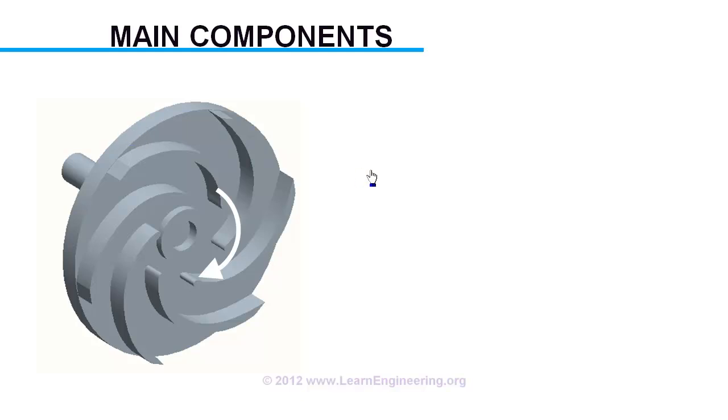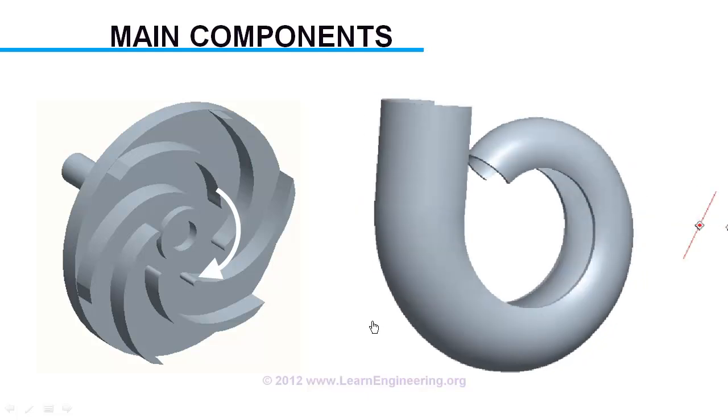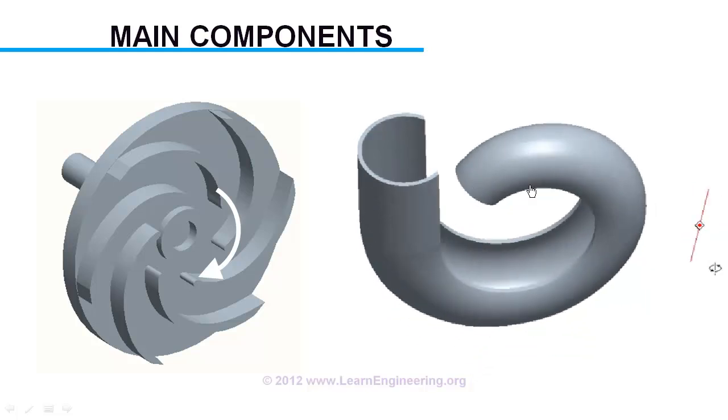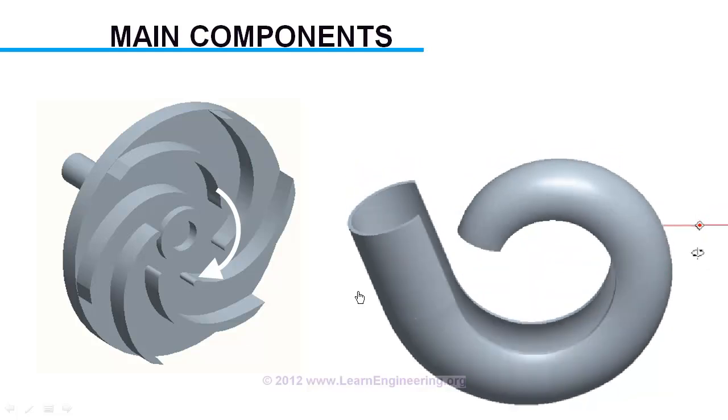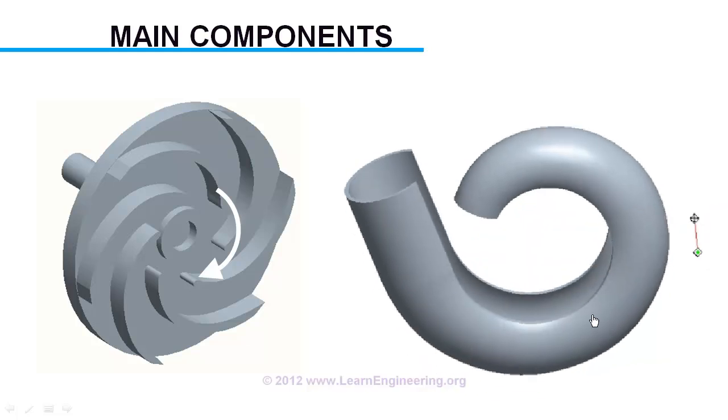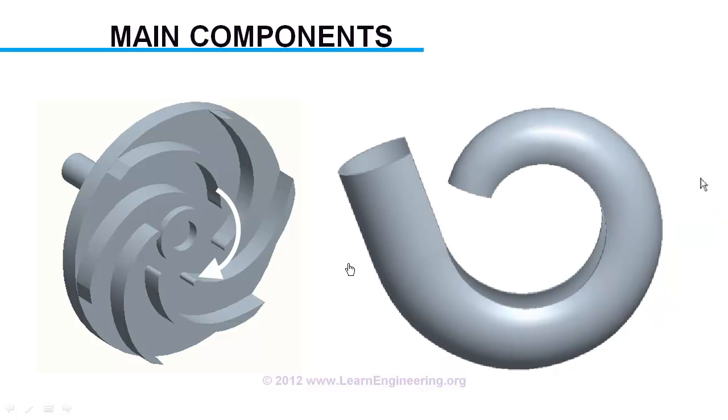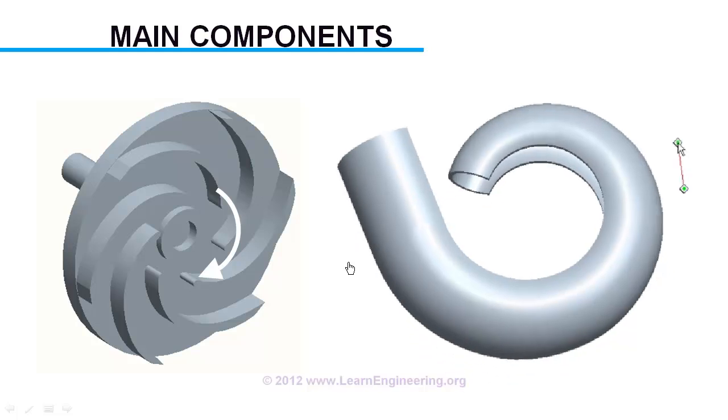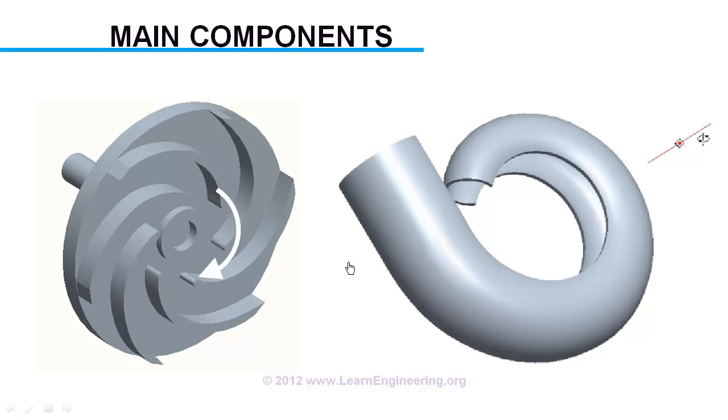Next component is casing, which collects fluid from impeller in an efficient way. The casing has got a special shape, with area of cross-section increases from inlet to outlet. As the impeller ejects fluid throughout casing, along length of casing mass flow rate increases. But increasing area of casing helps in maintaining almost same velocity. Thus volute-shaped casing helps in converting dynamic part of fluid energy to static part.